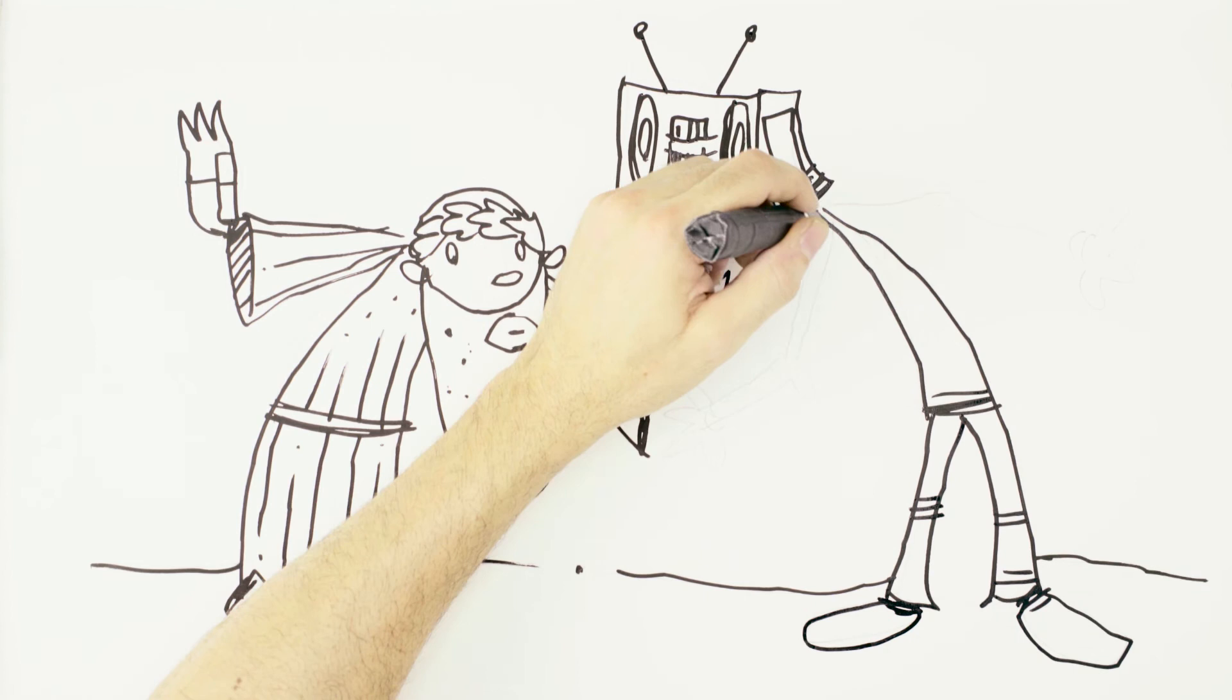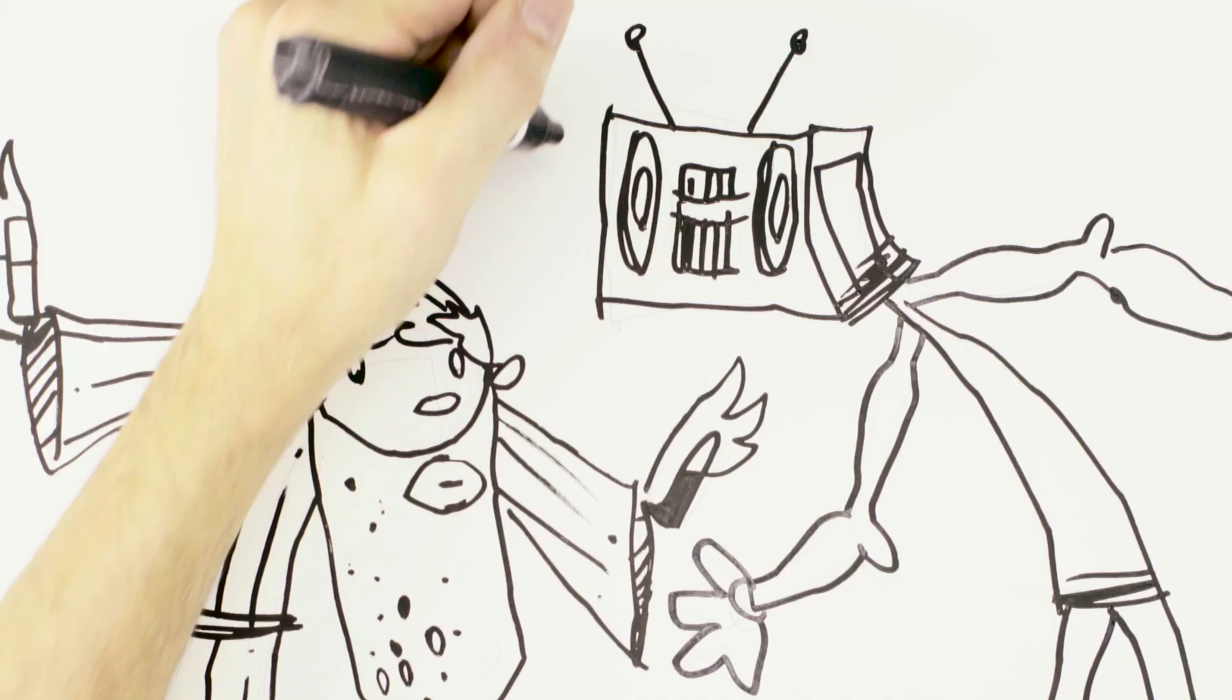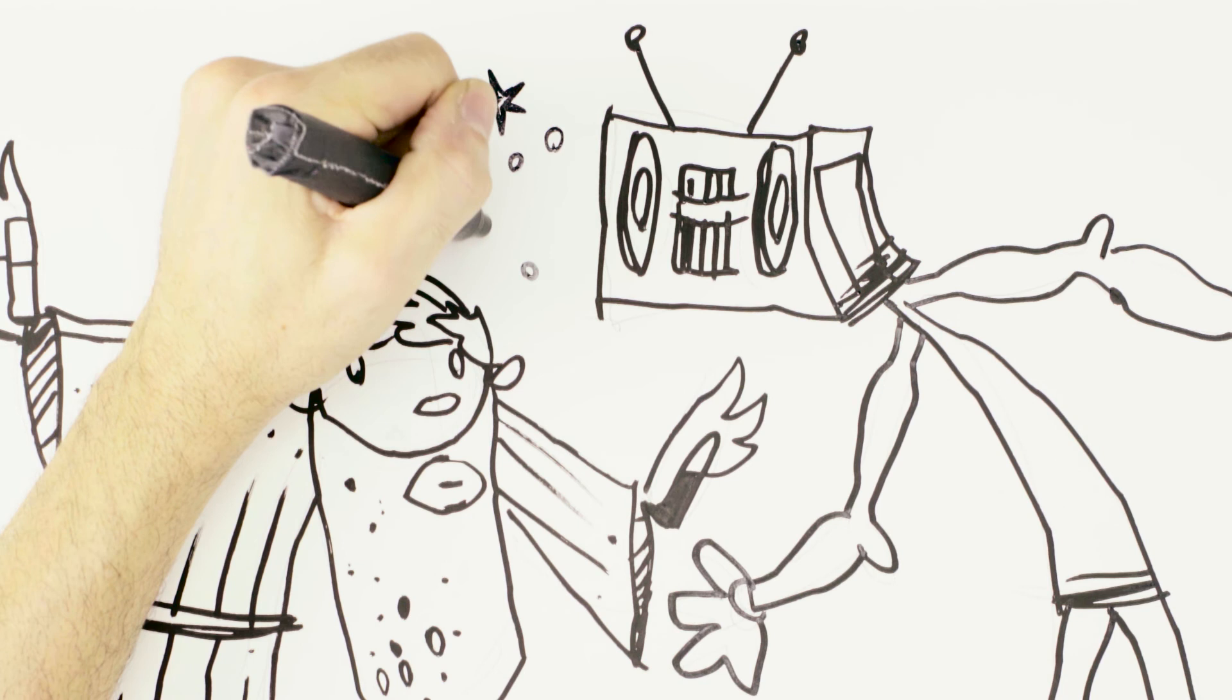Give him some muscles there as well. Burly forearms. And then lots of magical energy shapes around both of them to kind of denote that there's some sort of action taking place.